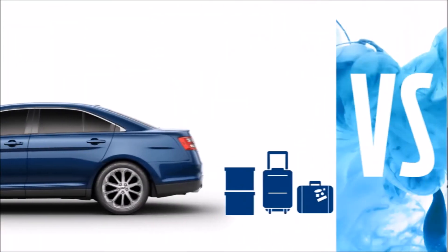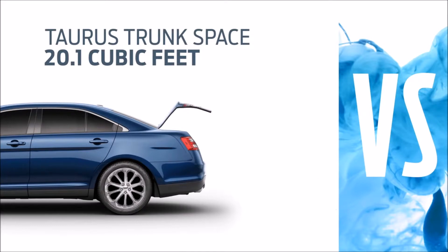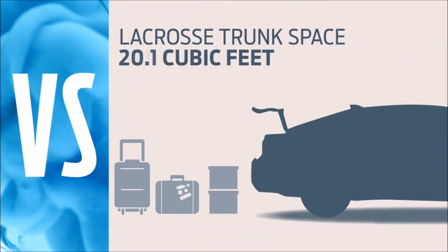Taurus is also big on trunk space with 20.1 cubic feet. LaCrosse only has 13.3 cubic feet.